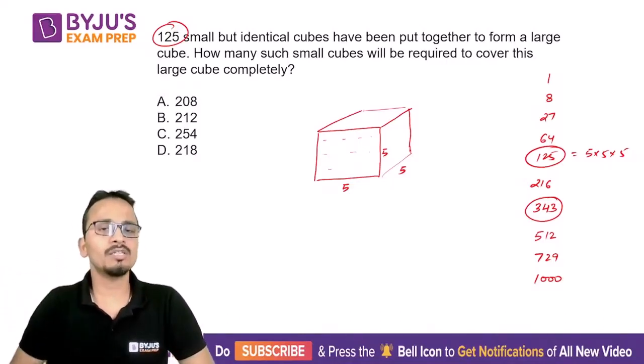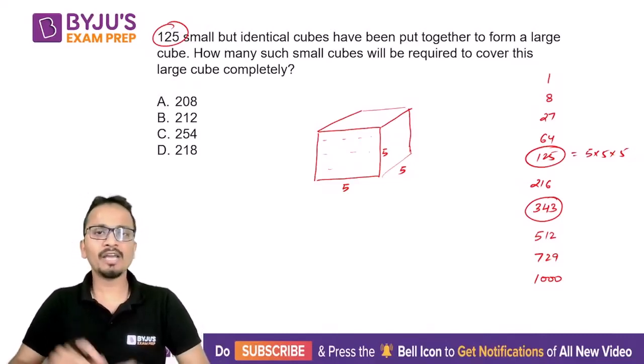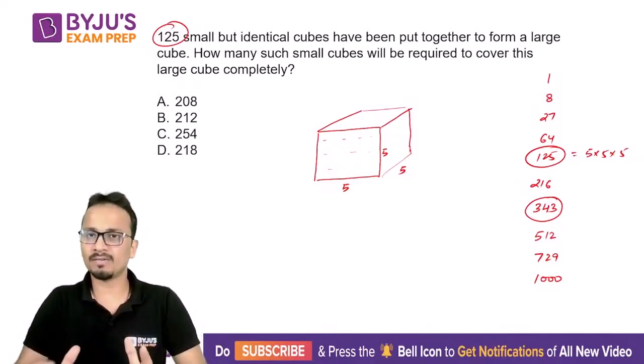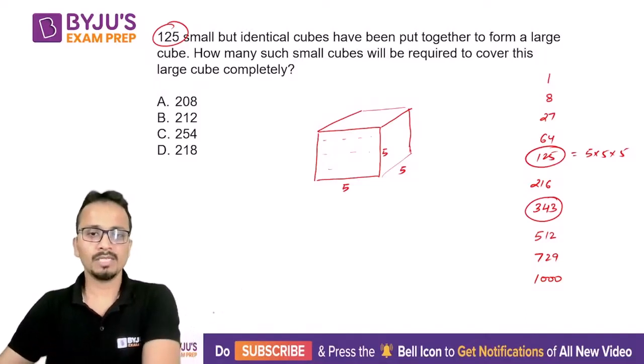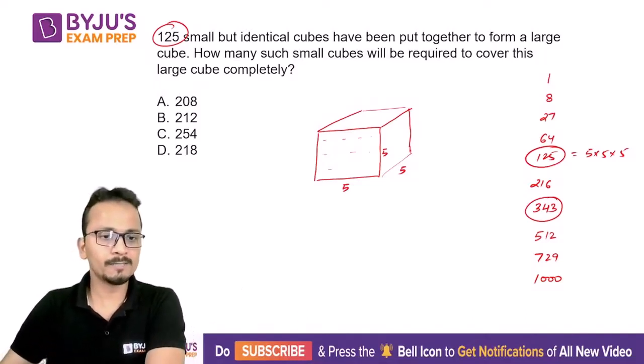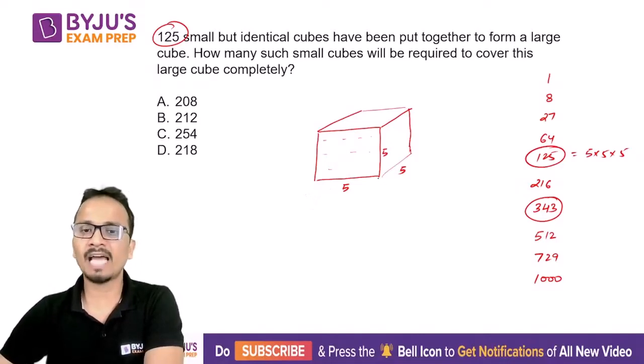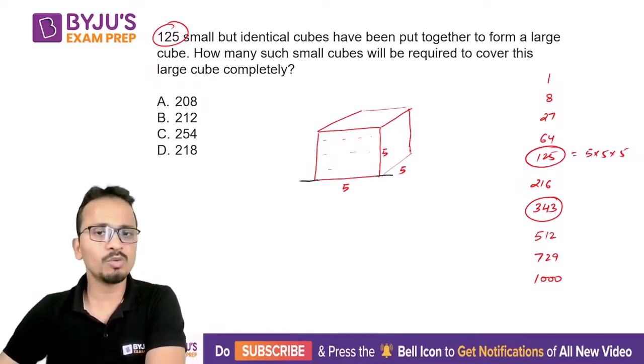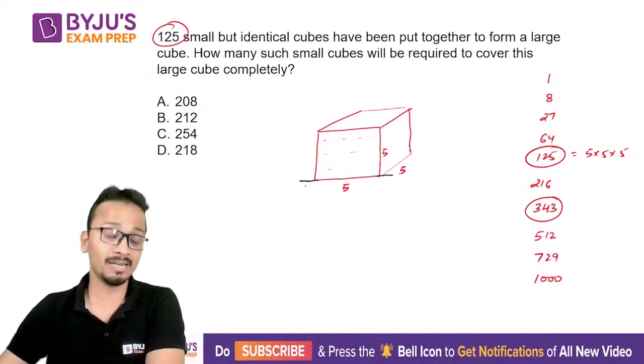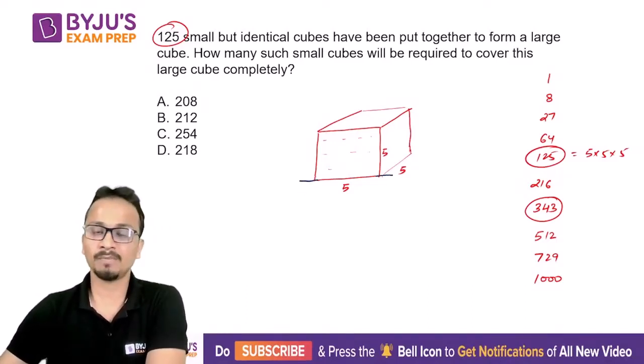Now if you want to completely cover this cube, then what you will require is another cube with different dimensions. Let's say one cube on the left side extra, one cube on the right side extra.